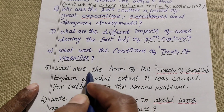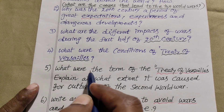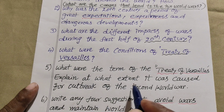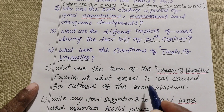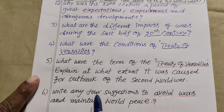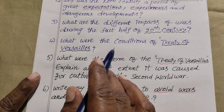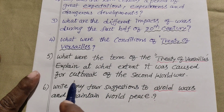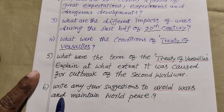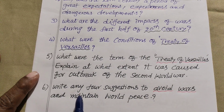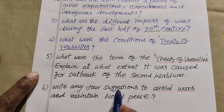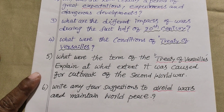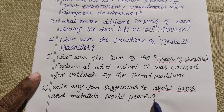The Treaty of Versailles contributed to the 2nd World War. I am going to show you the first half of the 20th century and the two world wars. Sixth question: write any 4 suggestions to avoid wars and maintain world peace.